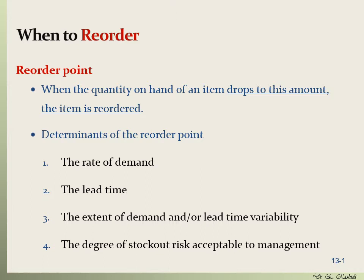The determinants of the reorder point are as follows. First is the rate of demand — the rate of usage per day, for example. Next is the lead time: the time it takes from when you place an order to when you receive it. Third is the extent of demand and/or lead time variability. Fourth is the degree of stockout risk acceptable to management. Based on these, you can compute the reorder point.